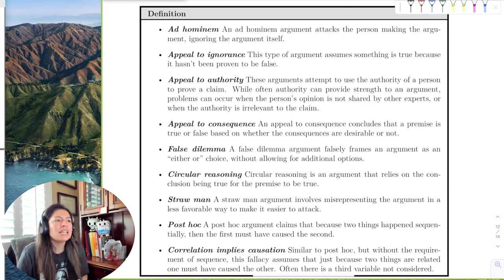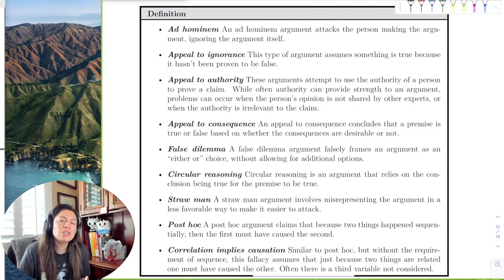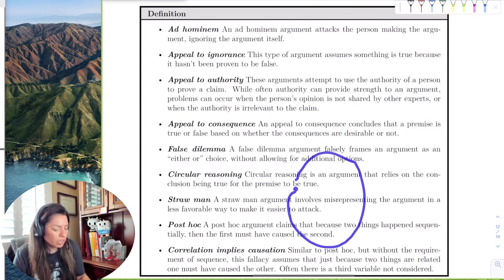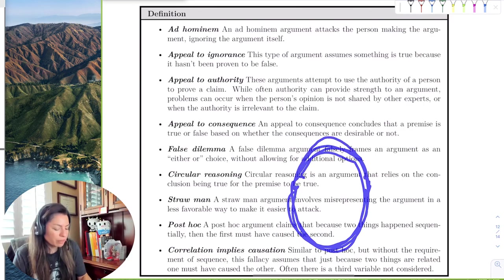Circular reasoning means that the premise is the conclusion and the conclusion is the premise, right? It just goes in a circle. Like, I am a cat. Cats are cute. I am a cat. Cats are cute. I must be cute because I'm a cat. And it just goes in a circle.